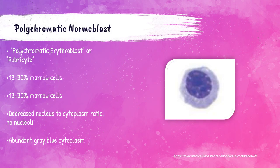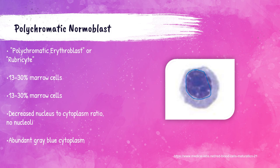The next cell in the maturation process is the polychromatic normoblast, also called a polychromatic erythroblast or rubricyte. These account for about 13 to 30% of all cells present within the bone marrow. There is a decreased nucleus to cytoplasm ratio and no nucleoli present. These cells can be up to 12 micrometers in size with abundant gray-blue cytoplasm. This gray-blue color is because the cell at this stage is beginning to produce hemoglobin.